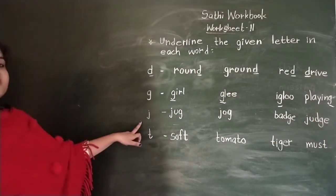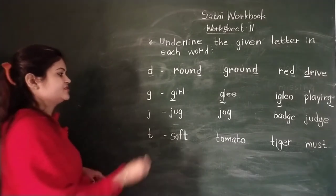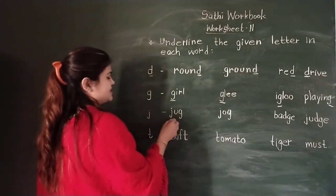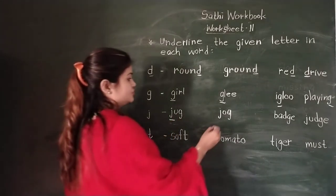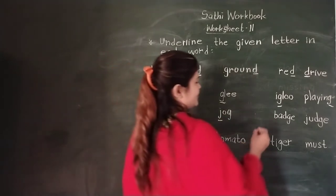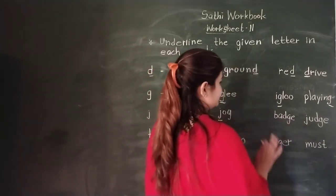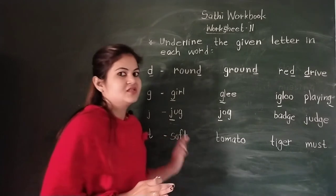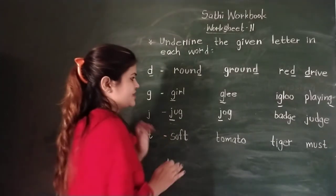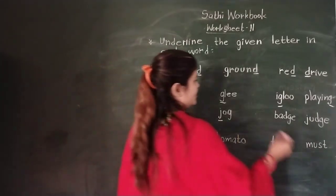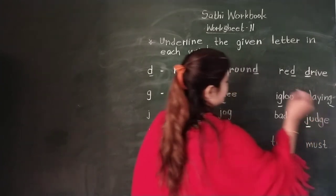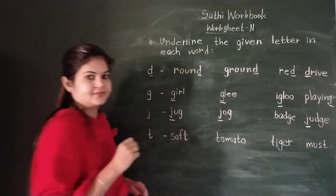Next is letter J. Which letter is J? J for 'judge' - this is J. In 'job', job is J. In 'batch', the letter J is not used - there is a sound, but not the letter J. Then there is 'judge' - judge is J.